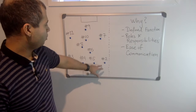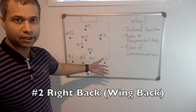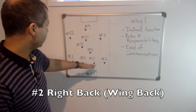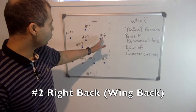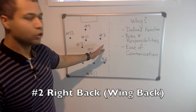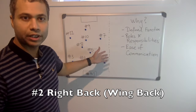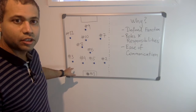Your number two is the right back or right wing back. Their job is to be part of the defense and to contribute to the attack when able. Brazil's Cafu mastered that position to become a world-class player.